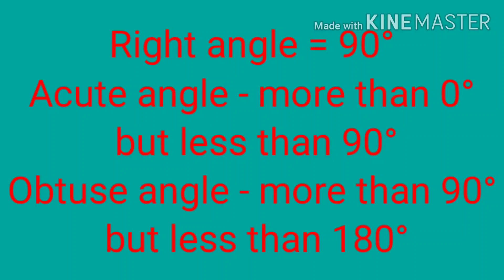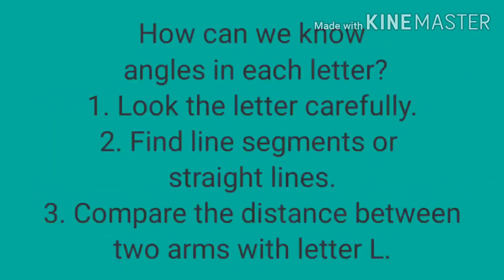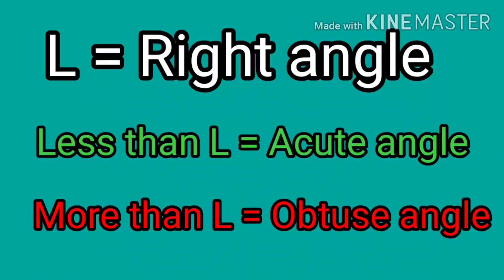To find angles in each letter, look at the letter and find if there are at least two arms — if there are two arms then an angle is possible, otherwise it is not. If the shape formed by two arms looks like the letter L, then it will be a right angle.